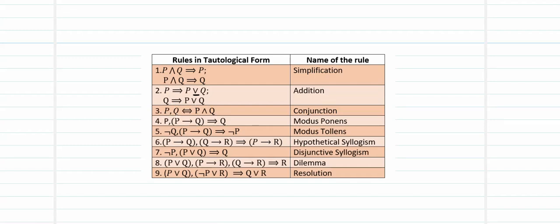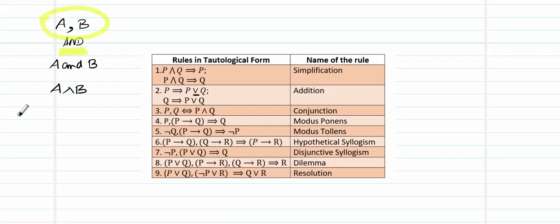P, Q is equivalent to P and Q (conjunction). We must keep in mind that whenever a quantity is separated by a comma, that comma refers to the logical operator AND. So when we say A, B it refers to A conjunction B. Now, P comma P-then-Q — this comma is our conjunction — so the proposition P and P-then-Q will infer Q. This is referred to as modus ponens.